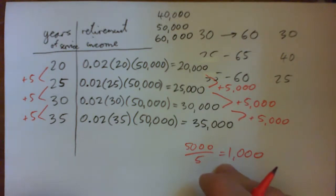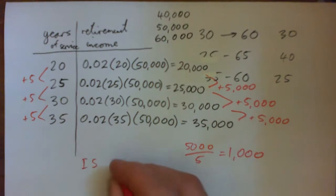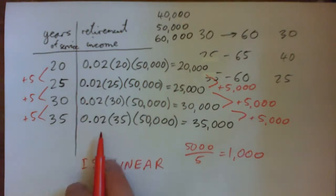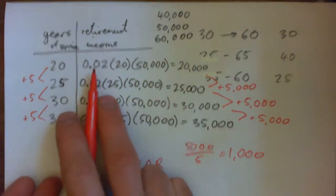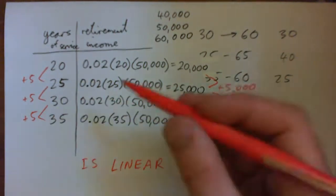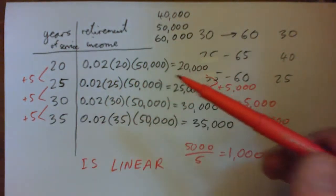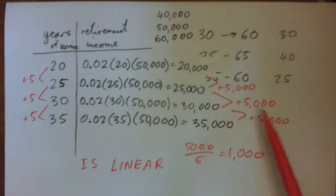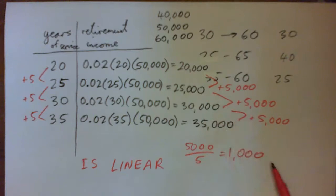Okay, so it is linear. And a lot of students will say it's not because there's a percentage involved, but that's not true. Percentage is just the decimal we're multiplying these numbers by. But yeah, for every, you know, it's going up by the exact same number, five thousand dollars each step. So that is a linear function, yeah.